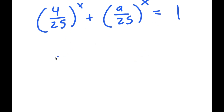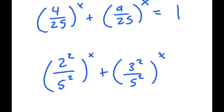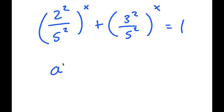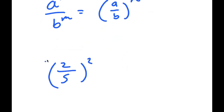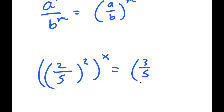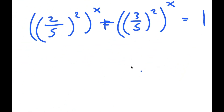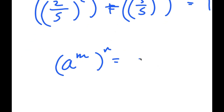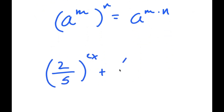I can rewrite 4 over 25 as 2 squared over 5 squared, and 9 over 25 as 3 squared over 5 squared. Applying the same rule, 2 squared over 5 squared becomes (2/5) squared, and 3 squared over 5 squared becomes (3/5) squared. Using the power rule (a^m)^n equals a^(mn), the 2 and x multiply, giving (2/5)^(2x) plus (3/5)^(2x) equals 1.